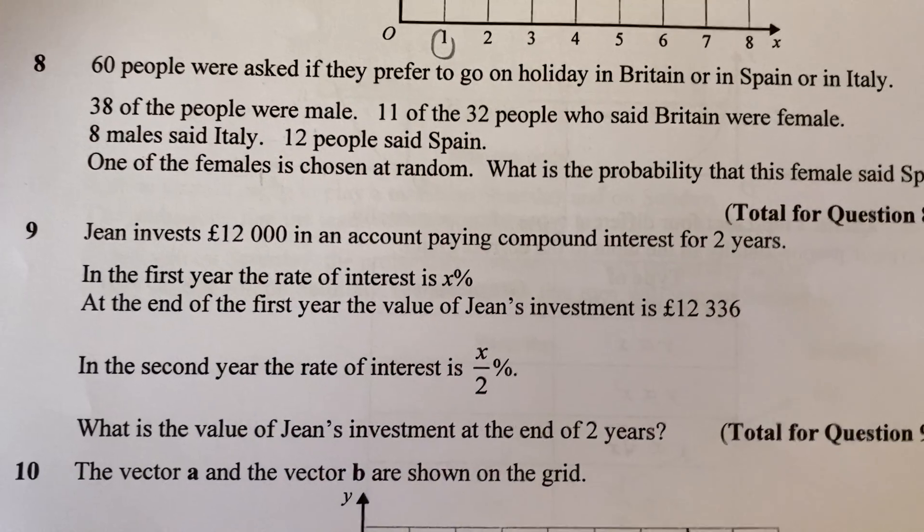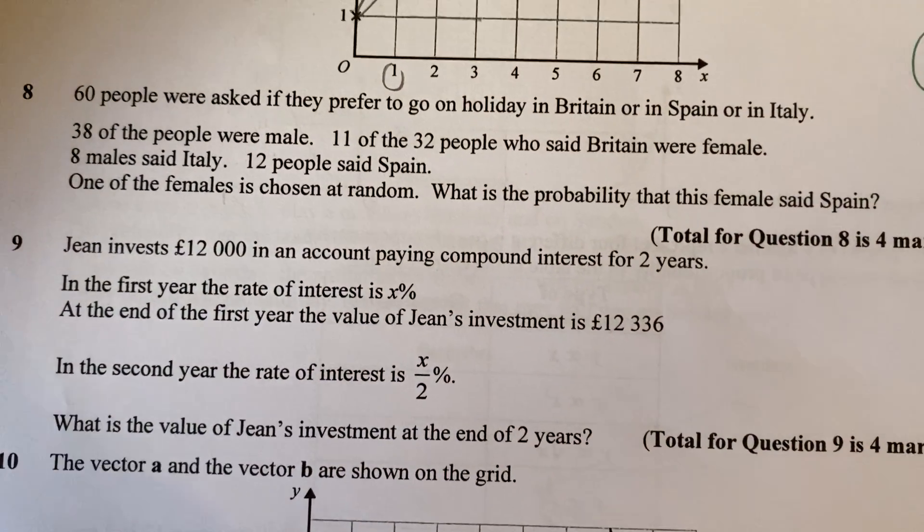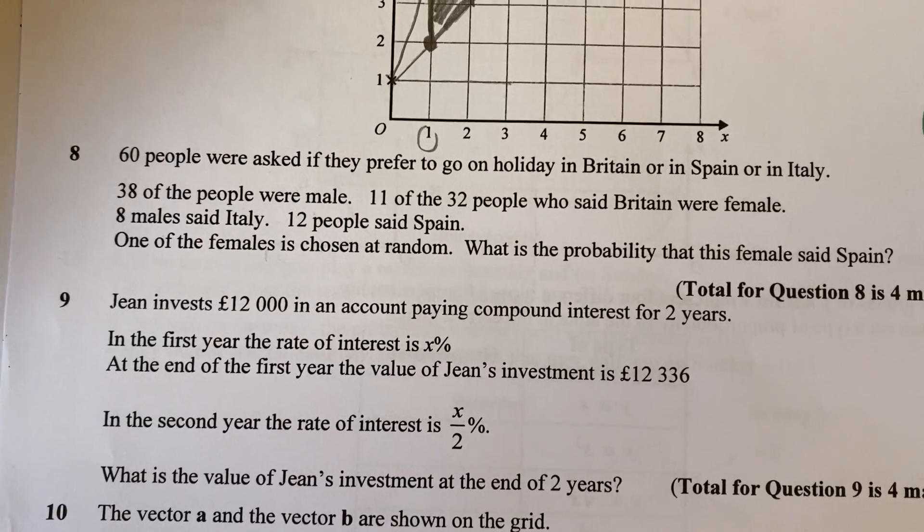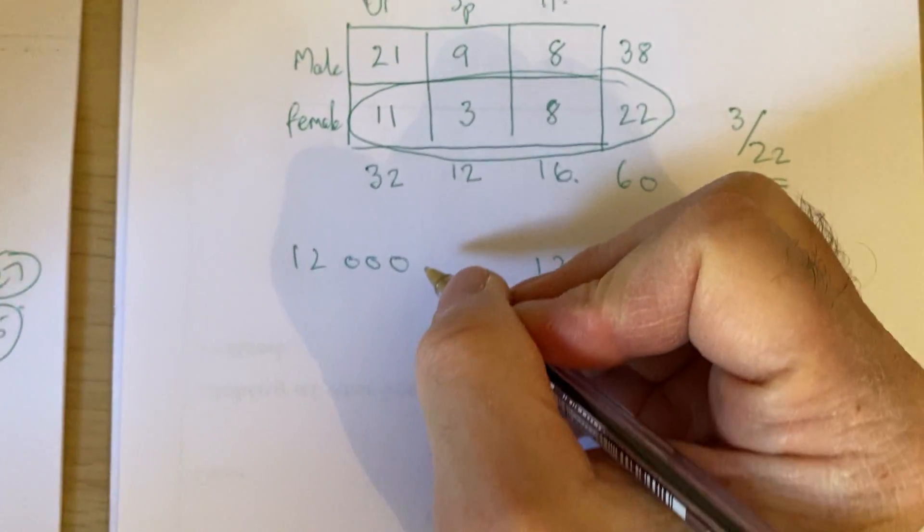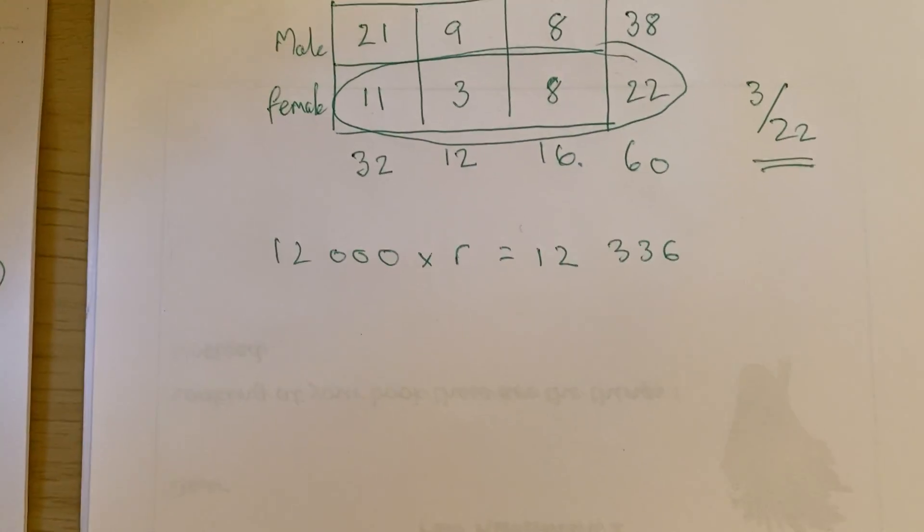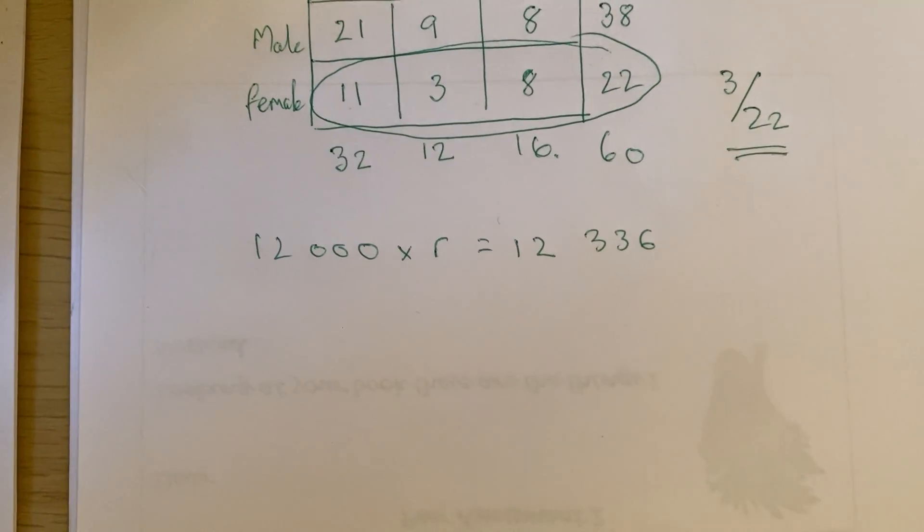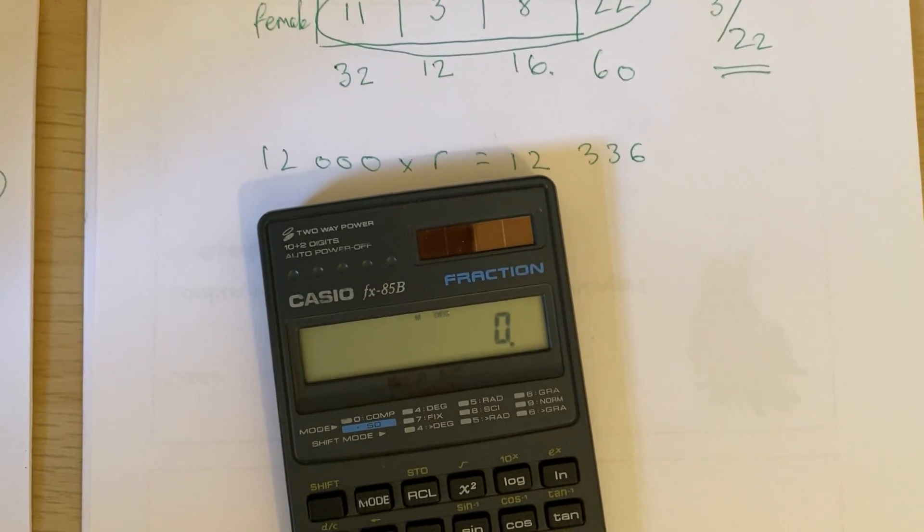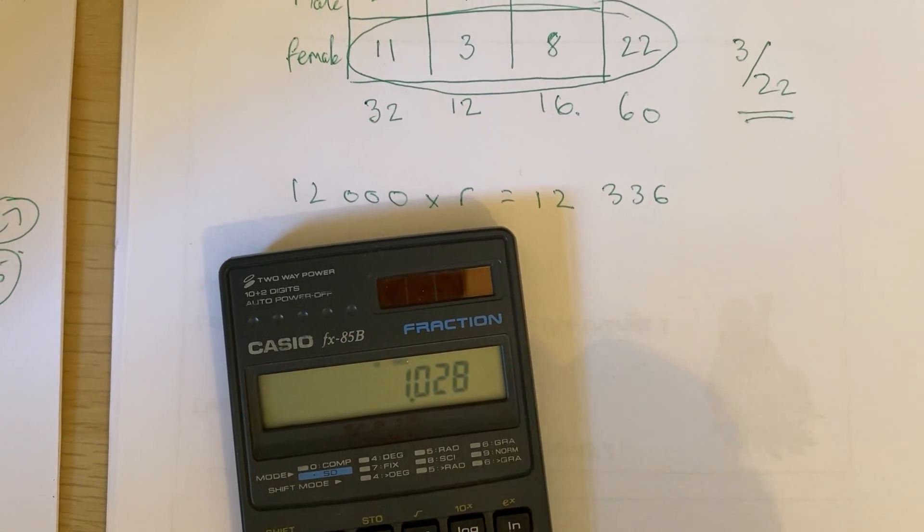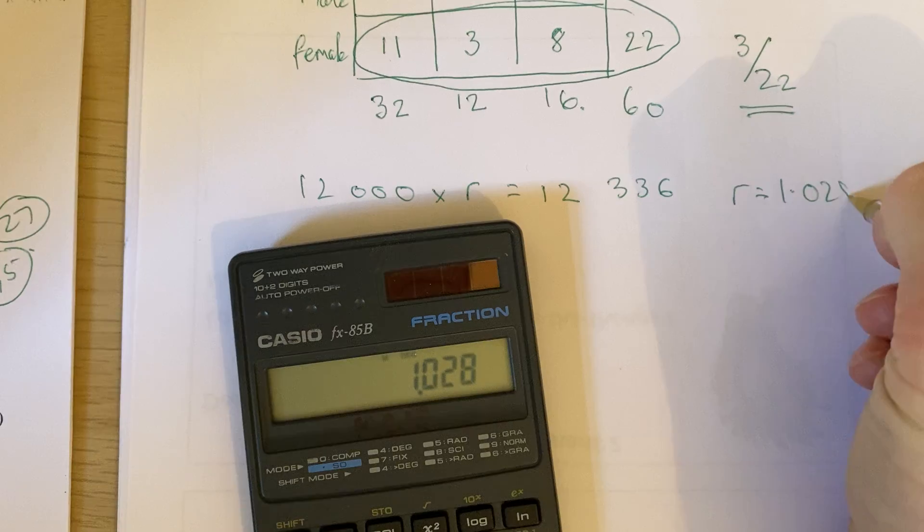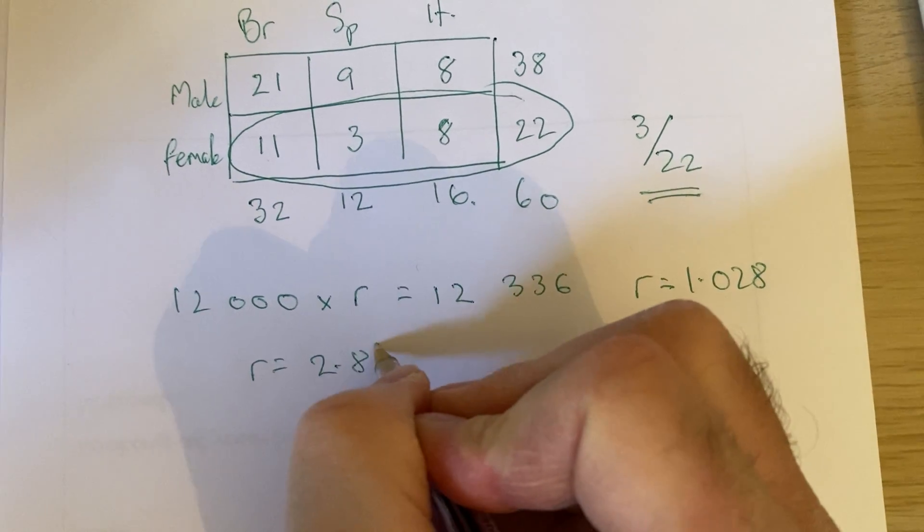Right, question nine. Jean invests £12,000 at a compound interest rate for two years. In the first year, the rate was X percent, but at the end, she got 12,336. So I've got to times this by something to equal 12,336. So I'm going to just do that straight away. I'm literally going to get my calculator. 12,336 divided by 12,000 equals. And I can see that R is 1.028. And we know that means a multiplier. So we know that rate was 2.8%.